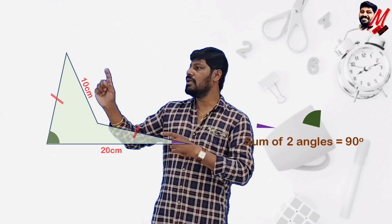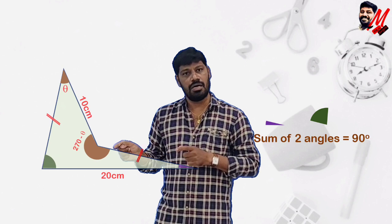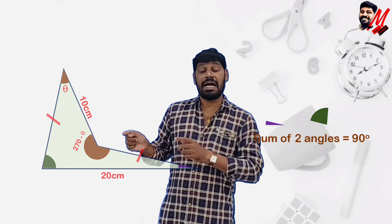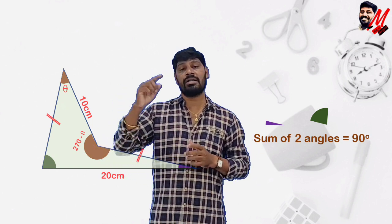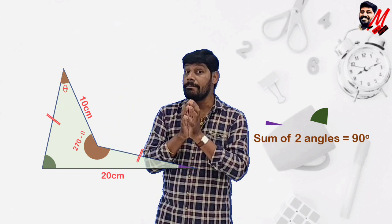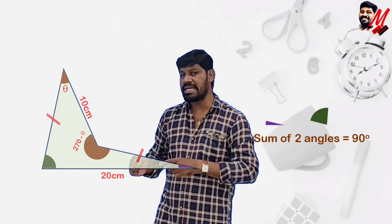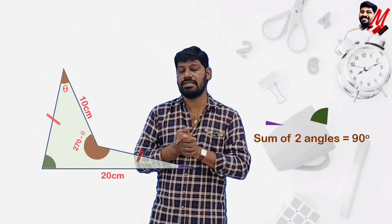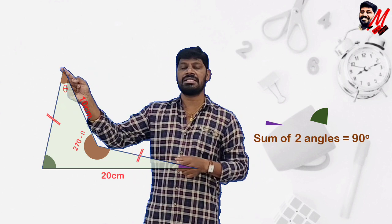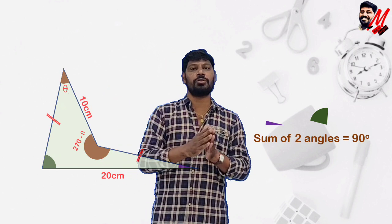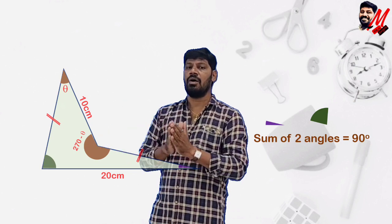Suppose this base angle is θ. The reflex interior angle visible at the concave vertex, which is more than 180°, will be 270° minus θ. This is because the sum of all four interior angles of a quadrilateral must be 360°, the sum of the two base angles is given as 90°, so the remaining two angles must sum to 270°. If one of them is θ, the other is 270° minus θ.